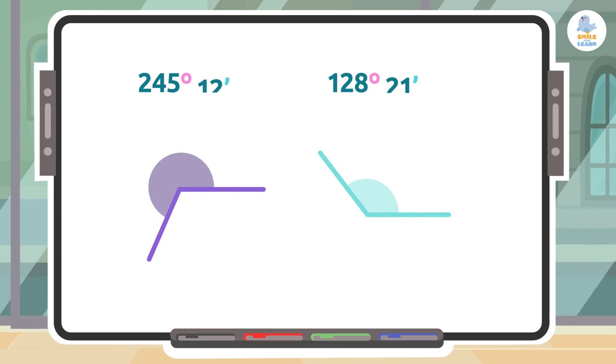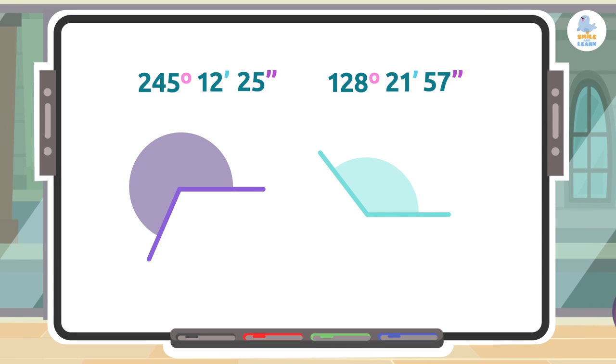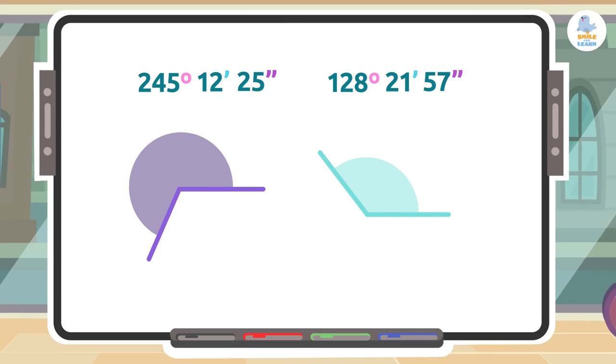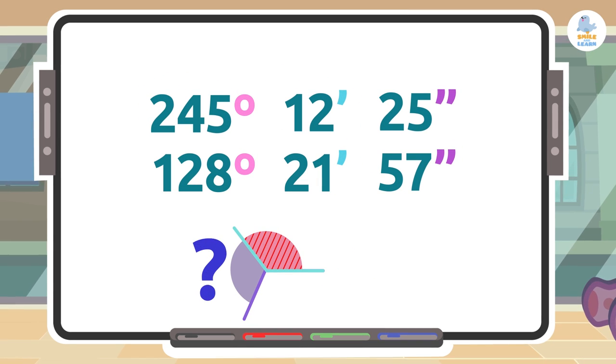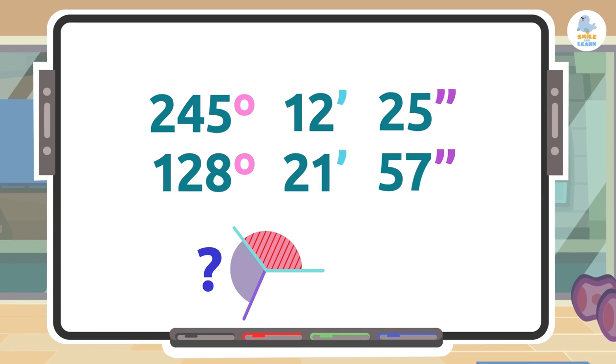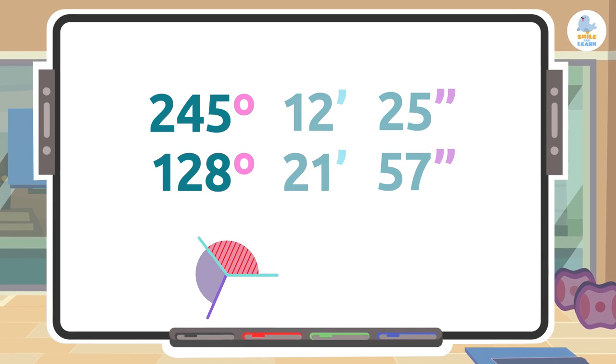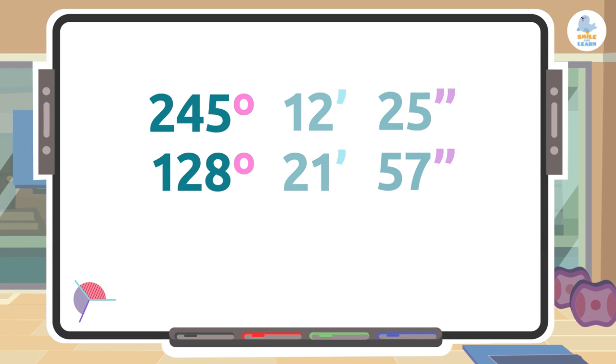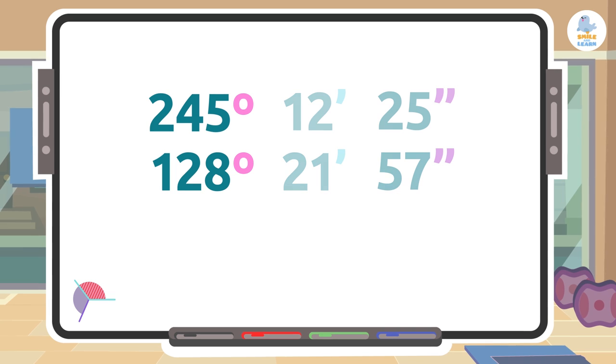The first step is to place the angle measures we want to subtract in the same format as a normal subtraction: smaller angle under the bigger angle. How do we know which one is bigger? Well, we have to look at the degrees. The number that has the largest degree will be the largest angle.